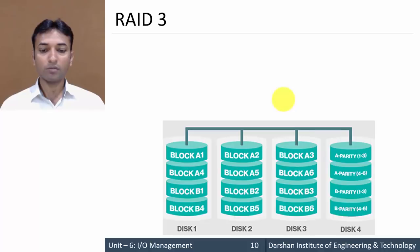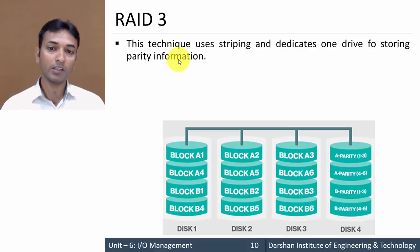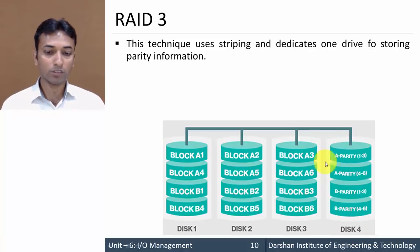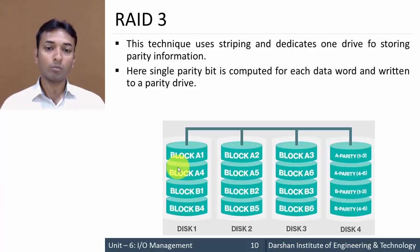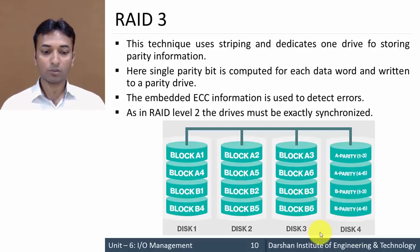RAID 3 has 4 drives: disk 1, disk 2, disk 3, and disk 4. This technique uses striping and dedicates one drive for storing parity information. Unlike RAID 2 where parity is distributed over different drives, in RAID 3 disk 4 is dedicated entirely for parity. A single parity bit is computed for each data word and written to the parity drive. The embedded ECC information is used to detect errors, and as in RAID 2, all drives must be exactly synchronized.